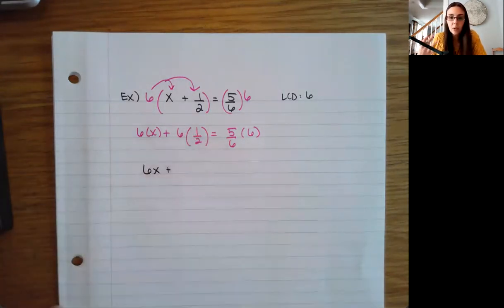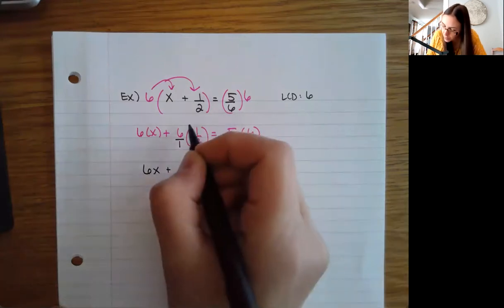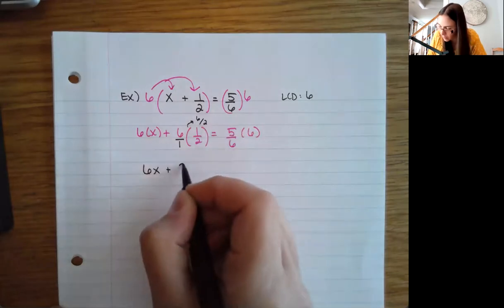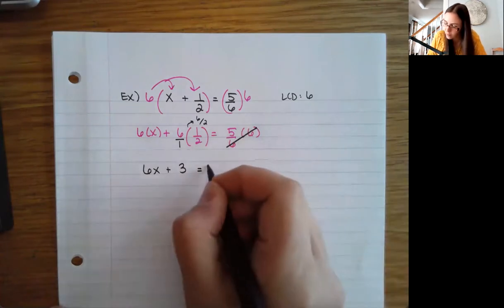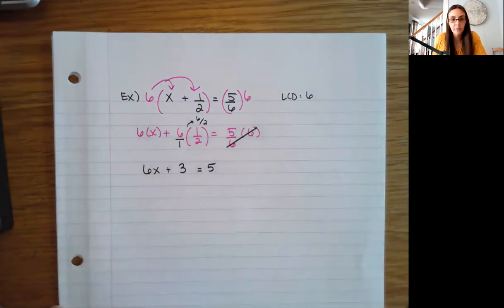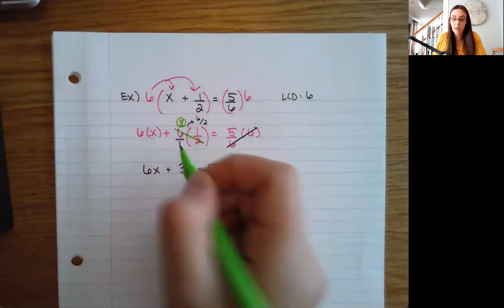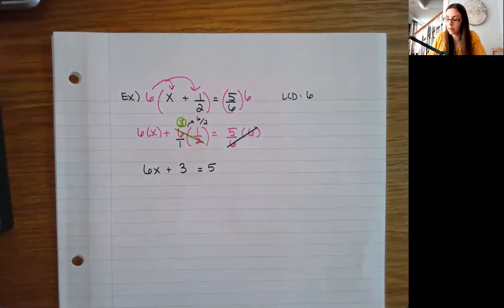Now you can either simplify first or multiply first — whatever works for you. If you multiply first, that six goes over one: six times one is six, and one times two is two, so you get three there. Or if you notice, six divided by two is just three, you can get that three that way as well, then three times one is three. Either way, all those fractions should disappear.